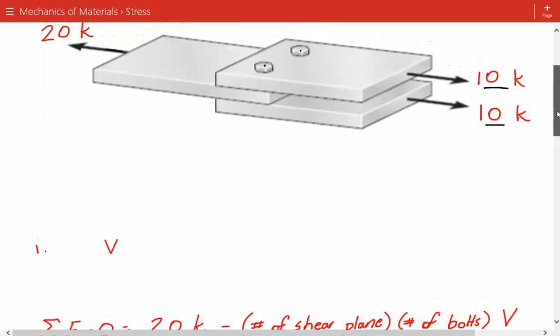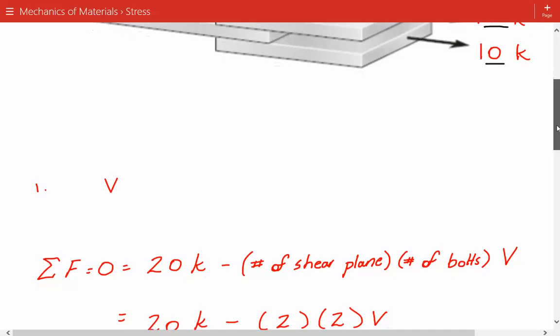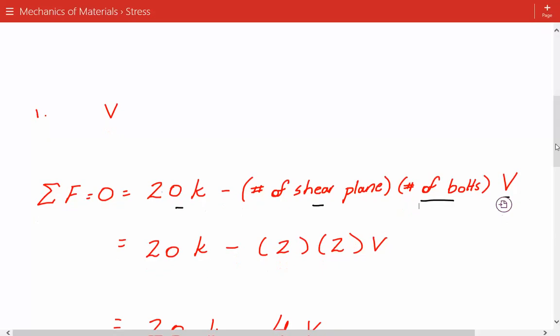We define the shear force as V, so we do summation of forces. It's equal to the external force of 20 kips minus V times the number of shear planes times the number of bolts. So we have our external force of 20 kips minus 2 times 2 times V. V is the shear force, and two is the number of shear planes.